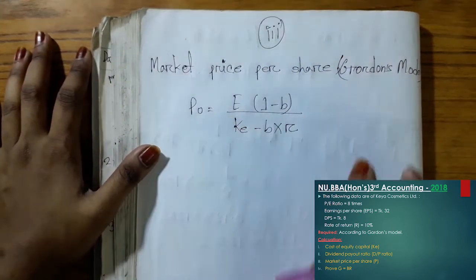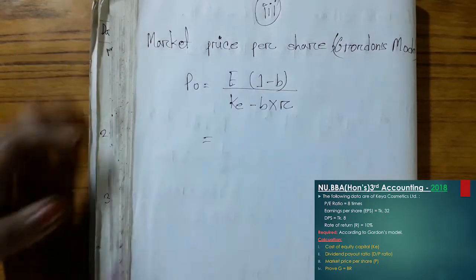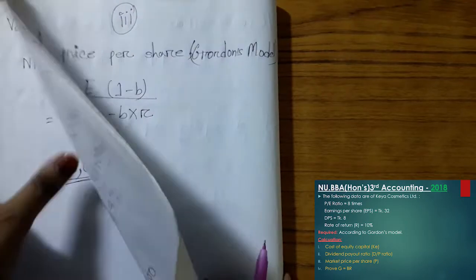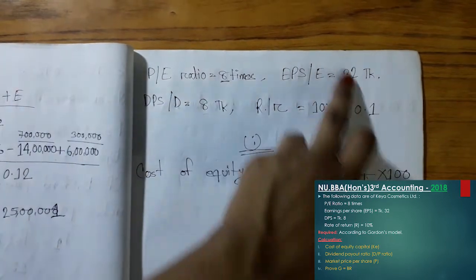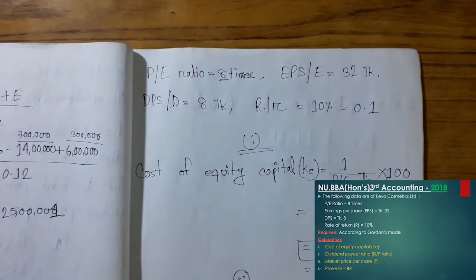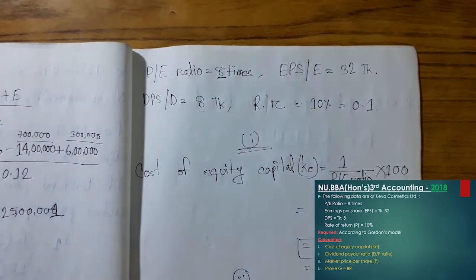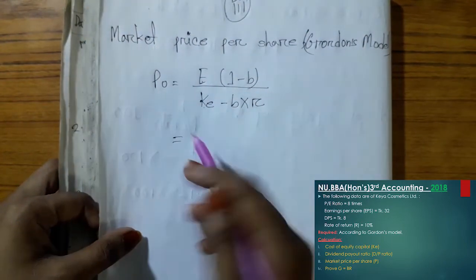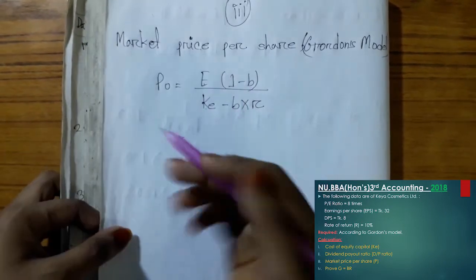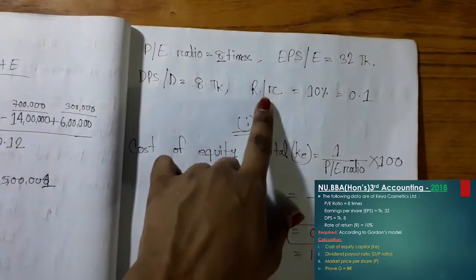Here is the market price per share using Gordon's model. The formula is: P0 = E(1 - B) divided by (KE minus B times R). Here E means EPS, and B means retention ratio. KE is the cost of equity capital. This is how we calculate the market price per share.